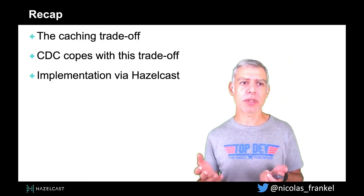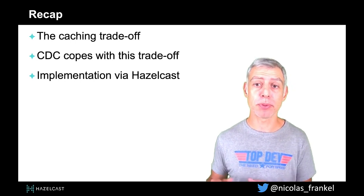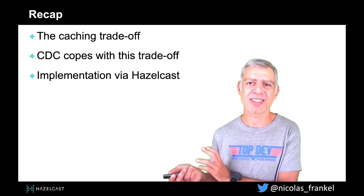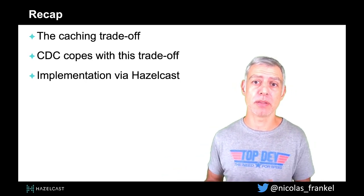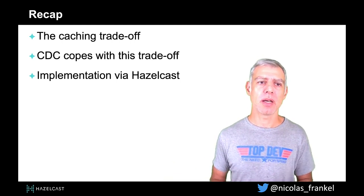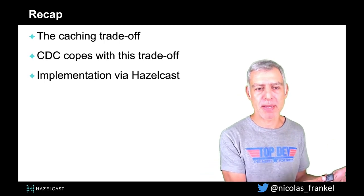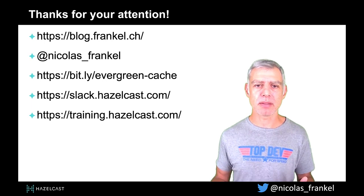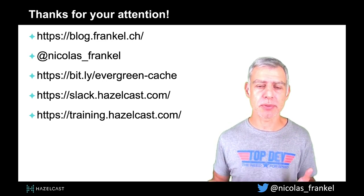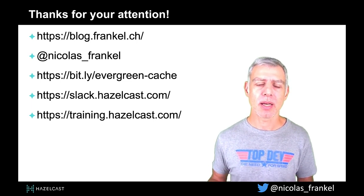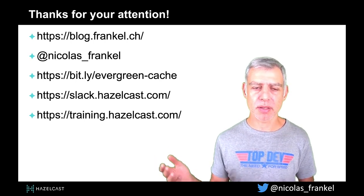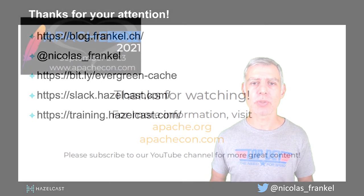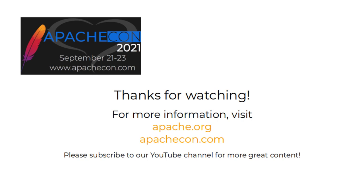A quick recap: in this talk I've shown you the caching trade-off — caching is not bad per se, it's a trade-off where you want fast data or available data and you accept stale data. But this staleness might be an issue. Change data capture allows you to cope with this trade-off, and I've shown you how to implement it with Hazelcast and Debezium. Thanks a lot for your attention. Here is my blog, my Twitter handle, and the Git repository — in case you want to go deeper into the code, please have a look. I'm happy to receive issues or comments. Thanks again and have a good day.